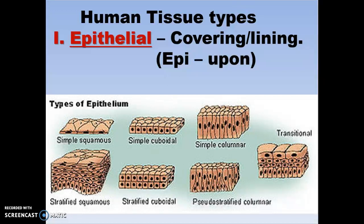Human tissue types. The first type we're going to talk about is the one which covers us, which we see. When you look at someone, you're mainly looking at dead cells on their surface. Epithelial — epi means upon — so the epithelial tissue covers you. Below here you see there's simple squamous, simple cuboidal, simple columnar, stratified squamous, stratified cuboidal, pseudostratified columnar, and transitional. Those are the main types of epithelial tissue we're going to talk about.